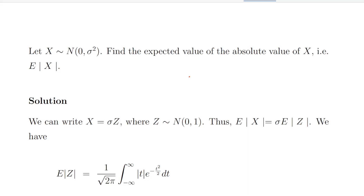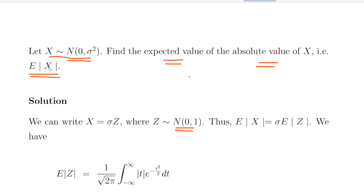In this presentation we are looking at continuous random variables, specifically normal random variables. We have X, a normal random variable with mean zero and variance sigma squared, written as N(0, σ²). Comparing to the standard normal random variable Z which is N(0,1), the variance is one. What we are asked to do in this question is find the expected value of the absolute value of X: E[|X|].